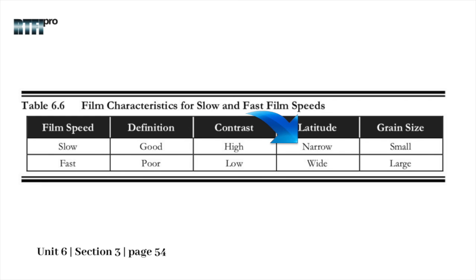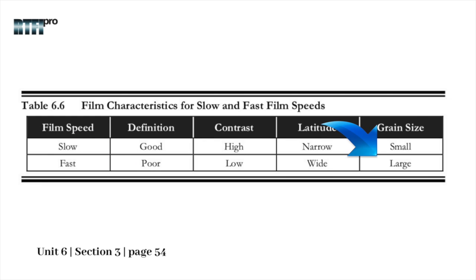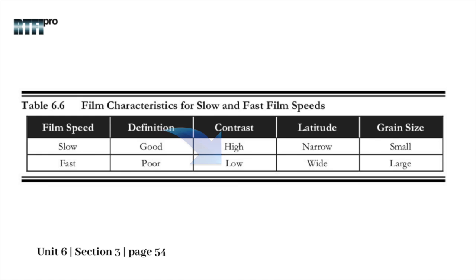In contrast, when we use a fast film, the definition becomes poor, mainly due to large grain size in the film structure. The contrast will become low, which makes the latitude wide.